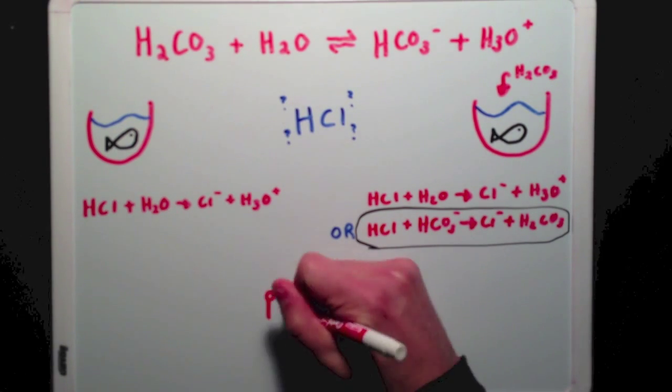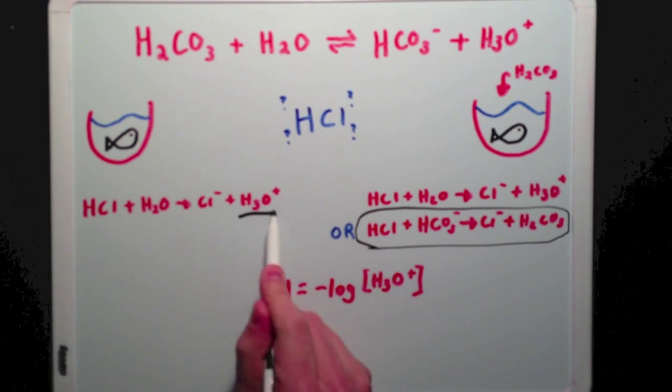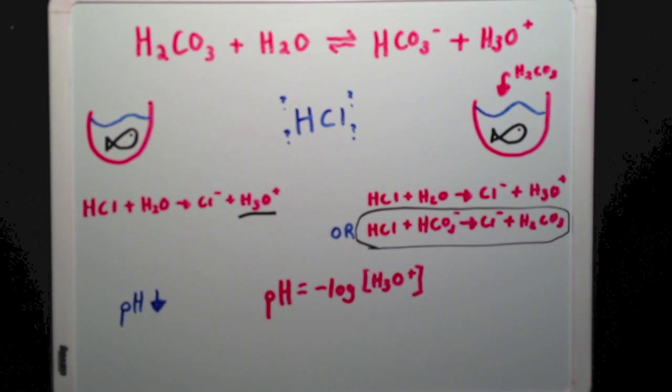Remember that pH is equal to the negative log of the hydronium concentration. In the first bowl, hydronium will definitely be formed, which will mean that the pH of the fishbowl will drop upon adding hydrochloric acid. In the second bowl, not much hydronium is formed at all, so the pH will stay relatively constant.